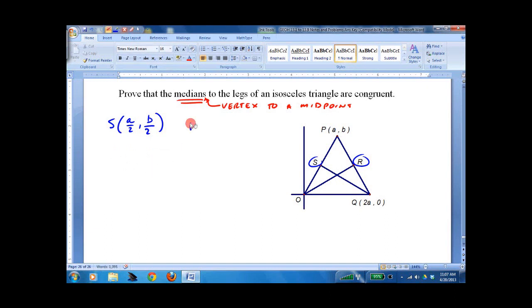And r is, this one's a little trickier. I will write this one out. a plus 2a all over 2. And I'll write this one out just for the fun of it. b plus 0 over 2. So r is 3a over 2. This is b over 2.